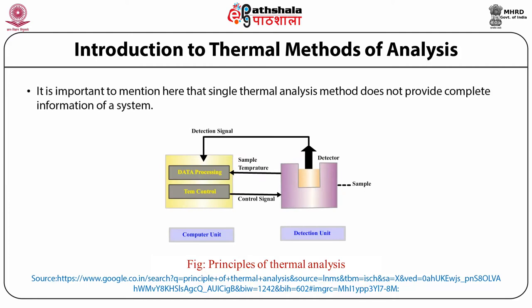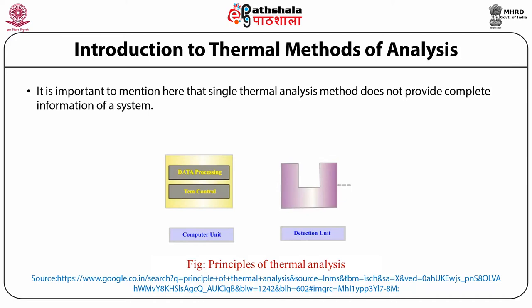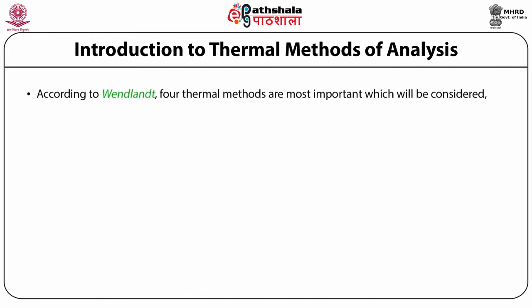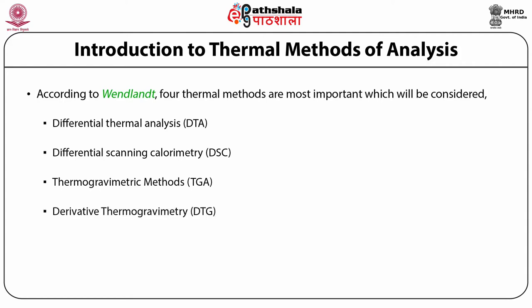It is important to mention that a single thermal analysis method does not provide complete information about a system; however, additional information may be provided by other thermal methods if required. According to Wendlandt, four thermal methods are most important: differential thermal analysis (DTA), differential scanning calorimetry (DSC), thermogravimetric analysis (TGA), and derivative thermogravimetry (DTG).